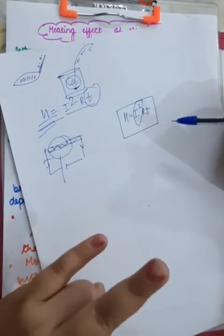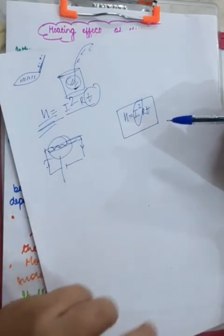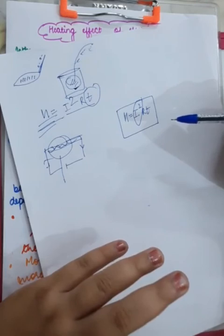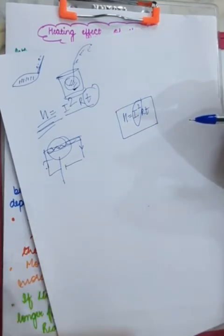Because the derivation is not there in the syllabus. But, what we need to remember? We need to remember the formula. We need to remember the factors on which heat produced will be dependent. So, this is it. Heating effect of electric current.